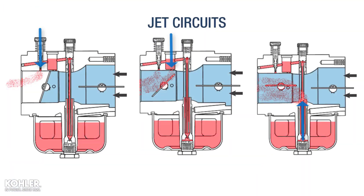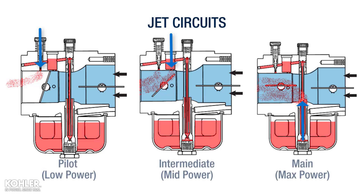For better understanding, I'm going to refer to carburetor jet circuits as pilot, intermediate, and main. And instead of relating throttle plate position to engine speed, I'm going to relate it to engine power.